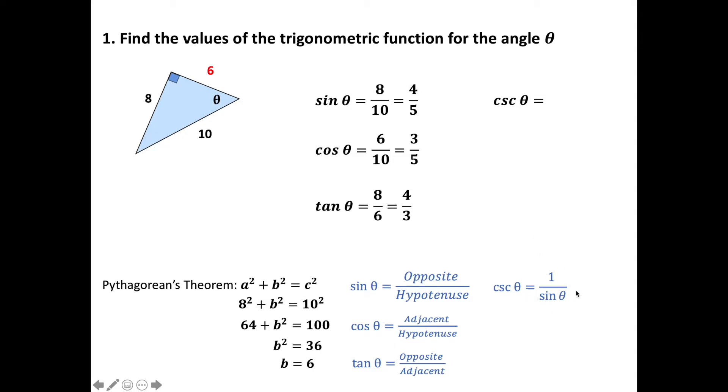Right now this is the fancy way of writing it, but what we can do is we can just flip these two. This is going to be hypotenuse divided by opposite, or we just take whatever the sine was and flip the two. So that's going to give me 5/4.